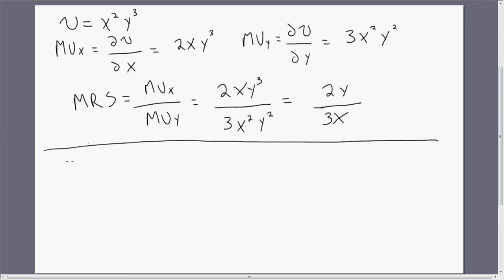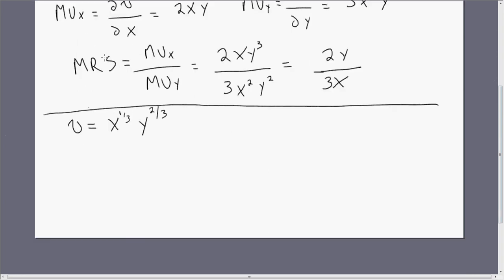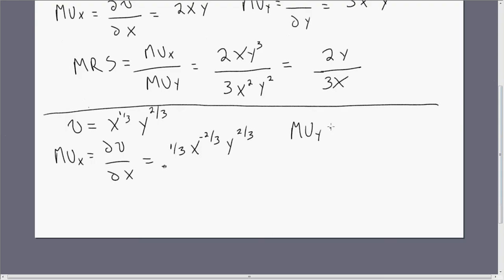Let's do another example. Here, utility equals x raised to the 1/3 power and y raised to the 2/3 power. X represents units of good x, y represents units of good y. The marginal utility of good x: bring down the 1/3 in front, 1/3 minus 1 leaves us minus 2/3. And the marginal utility of good y: bring down the 2/3 in front, 2/3 minus 1 leaves us y raised to the minus 1/3 power.